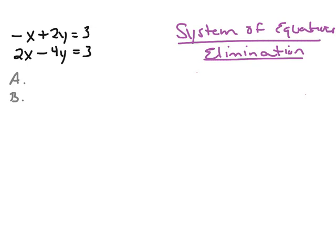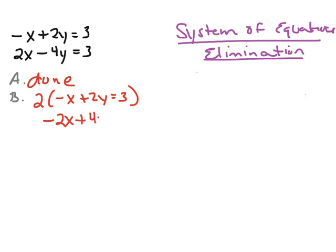Let's take a look at one last example of solving a system of equations using the elimination method. The first step, again, is to make sure both equations are written in standard form with x's, y's, and constants lined up — which we have here, so that step is done. The next step is to make sure the numbers in front of the x's or y's are opposites of each other. In this case, I'm going to multiply that first equation by 2. So 2 times negative x is negative 2x, 2 times 2y is 4y, and 2 times 3 equals 6. My new equation is negative 2x plus 4y equals 6.